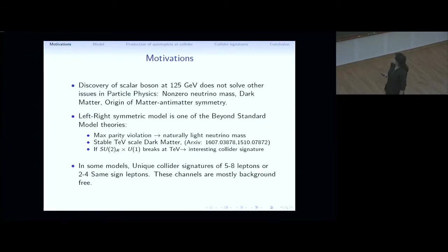First to talk briefly about the motivations. We all know that there's a scalar boson at 125 GeV, but it doesn't necessarily solve all the issues. That's why we have gathered here. The issues like non-zero neutrino mass, dark matter, origin of matter-antimatter symmetry, et cetera. The left-right symmetric model is one of the beyond standard model theories that gives you this solution. It's like maximum parity violation and it gives naturally light neutrino mass, stable TeV scale dark matter. And if the SU2R cross U1 breaks at TeV scale, it gives you interesting collider signatures.